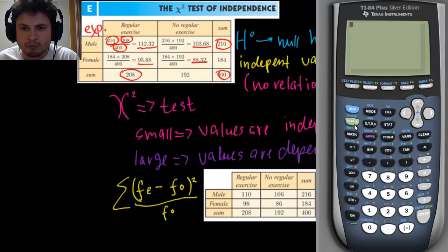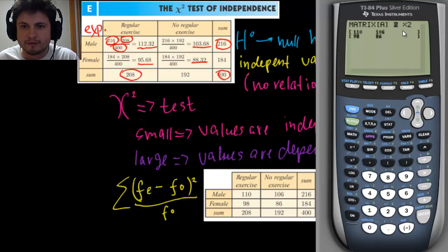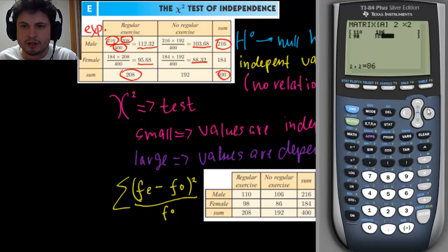To do this, we need to click on the button called Matrix, because we're going to be creating a table — these are called matrices in math. Click on Second, then where it says Matrix, go to Edit and click on matrix A. Enter it as a two-by-two matrix and input all the values: 110, 98, 106, and 86. This will save your matrix table as A.